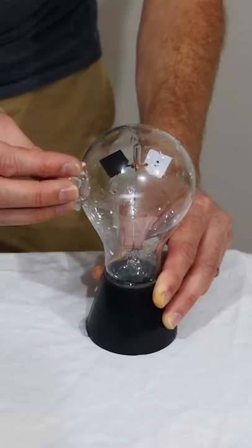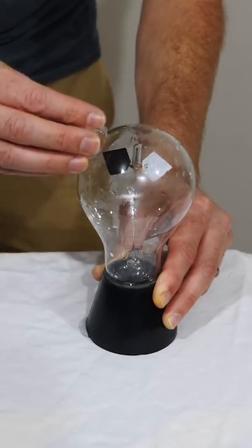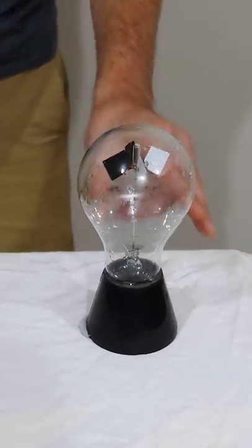So in this case, the black side gets colder than the white side, and the white side heats up and causes it to spin in the opposite direction.